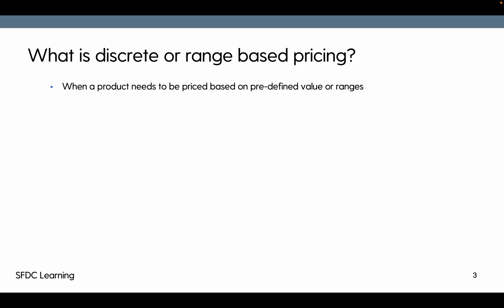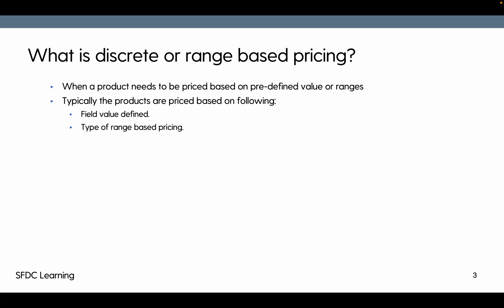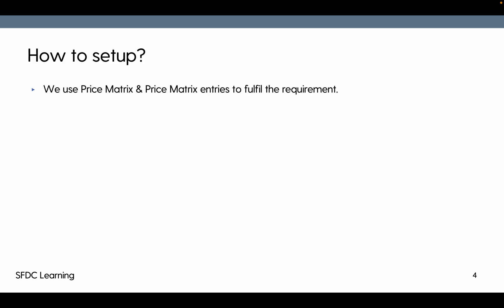When a product is priced based on defined ranges, it becomes range-based pricing. Typically, products are priced based on two things: the field value that is defined — we will define a field on which we want to run our pricing engine and provide the price — and the type of range being defined. If it is range-based pricing, we'll see how ranges get calculated. These two things are useful when pricing a product based on metrics.